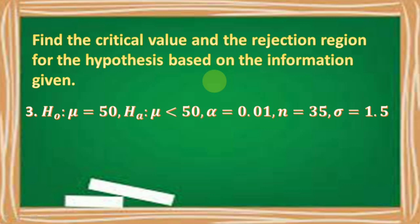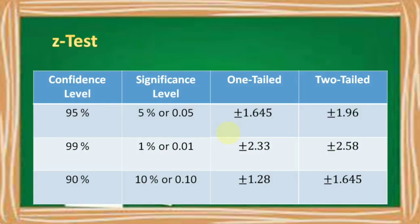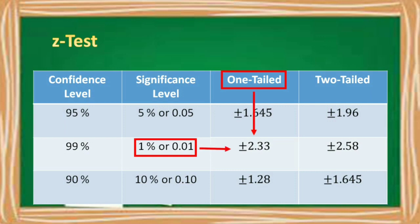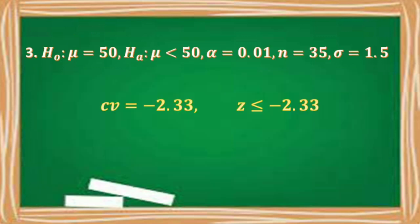Problem 3: H₀: μ = 50, Hₐ: μ < 50, significance level 0.01, sample size 35, standard deviation 1.5. Since n > 30, we use the Z-test. With α = 0.01 and a one-tailed test, our critical value is −2.33. The rejection region is Z ≤ −2.33.